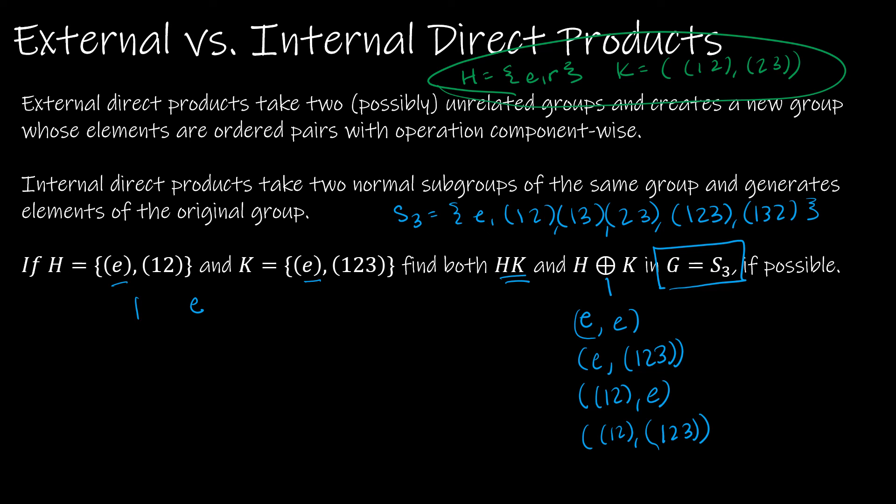So obviously, we don't have all of the elements, because when I take e times e, I get e. If I take e times (1,2,3), I get (1,2,3). If I take e times e, again, I get e.